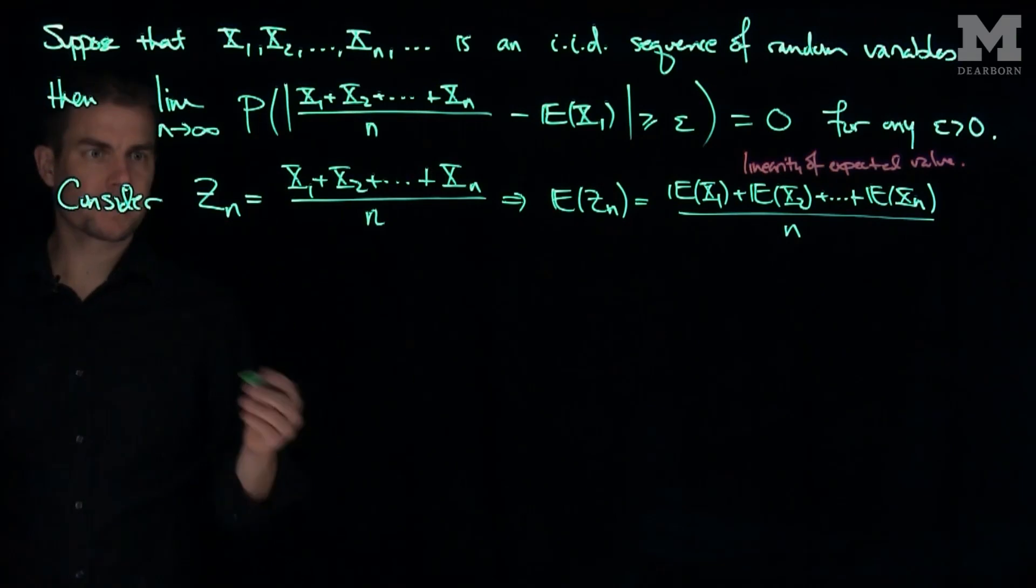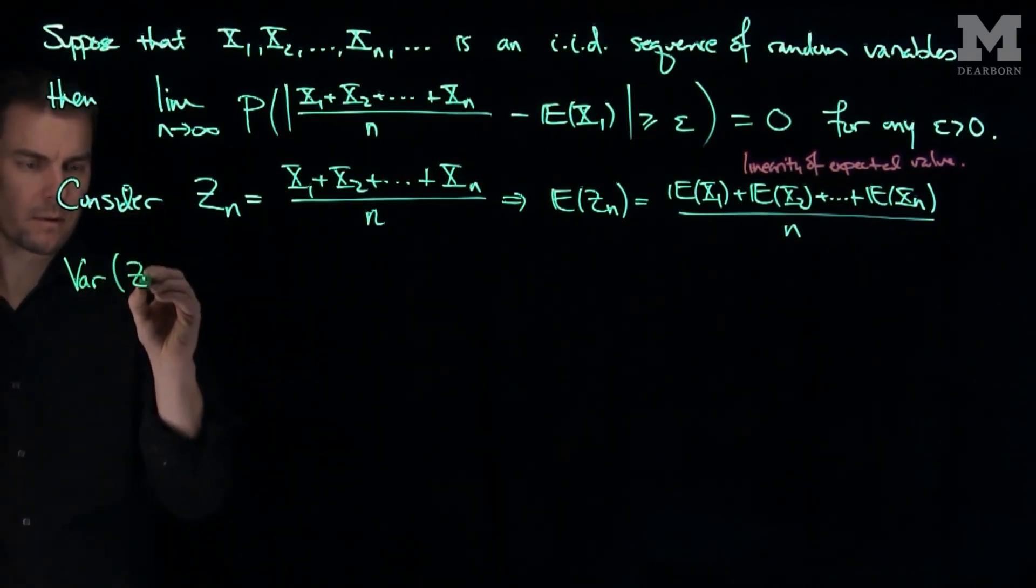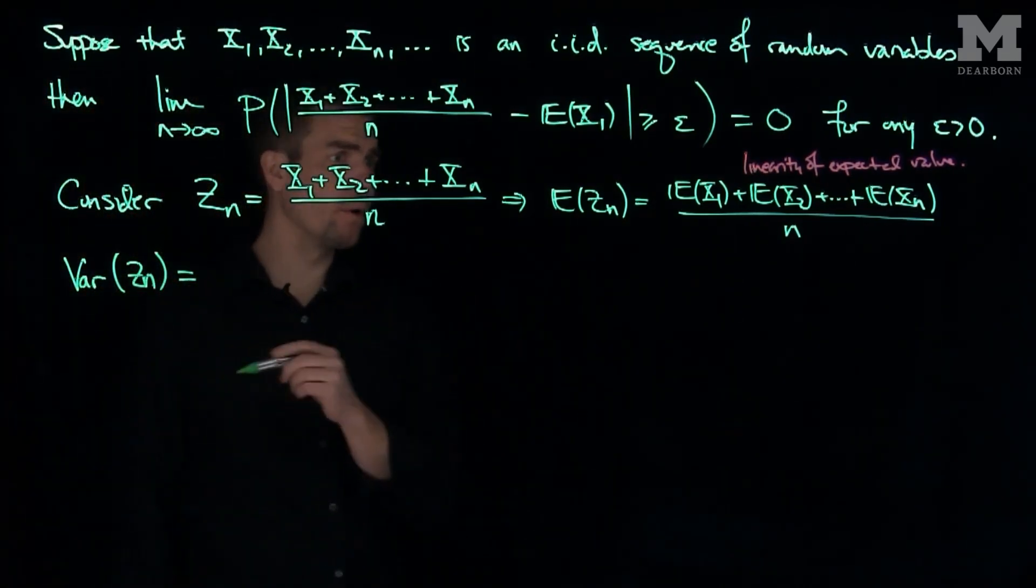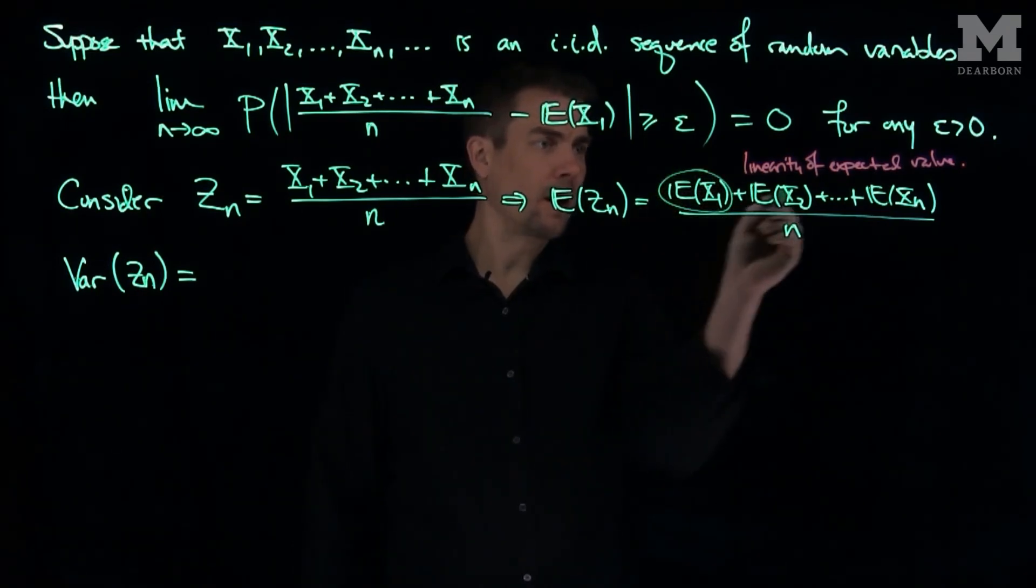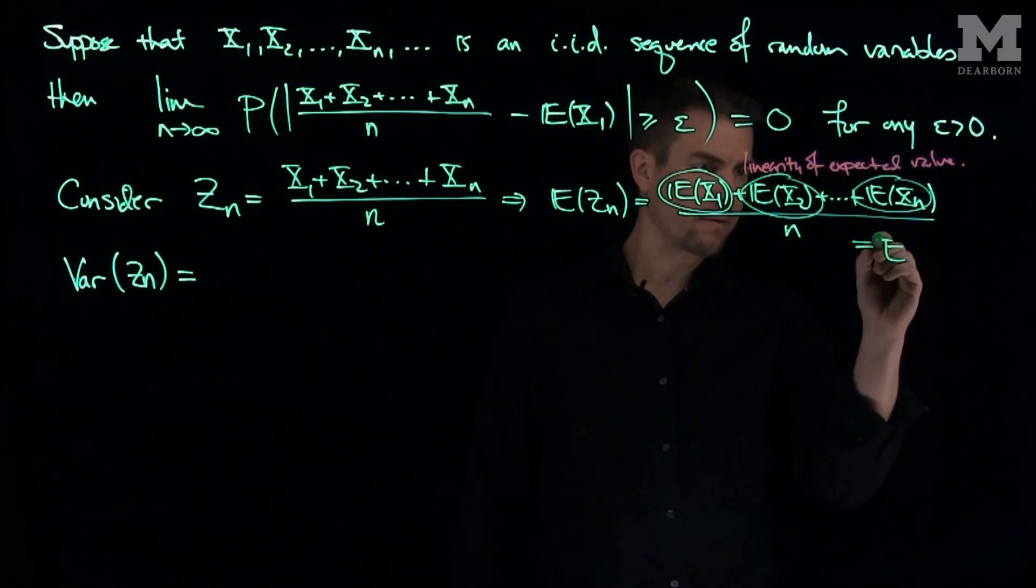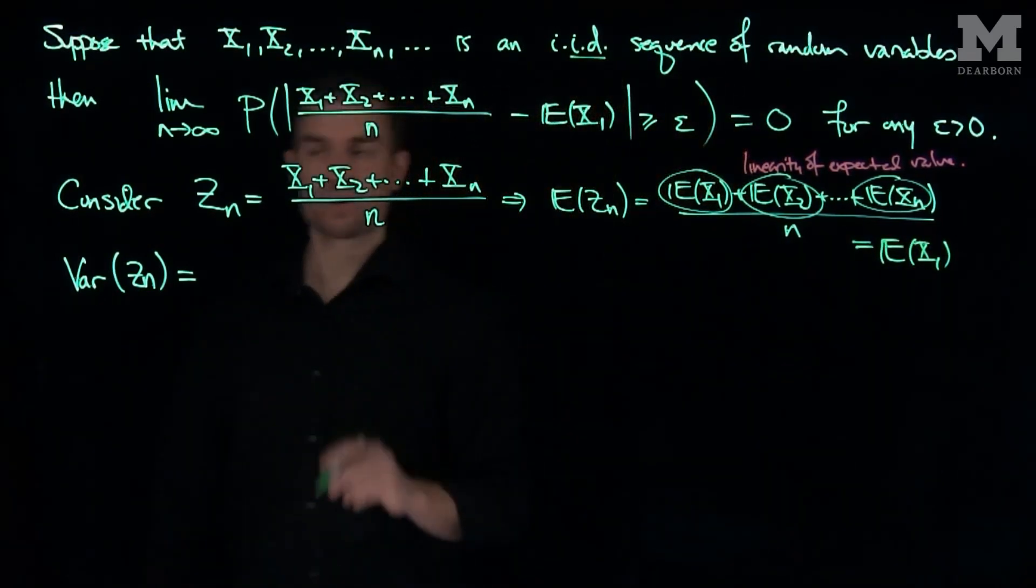That's the linearity of expected value. And let's find the variance of zn. So the variance of zn will be equal to... One other thing we can notice about the expected value of zn, each of these things are the same, because they're identically distributed, so we can simplify this just to the expected value of x1, since they have the same distribution.